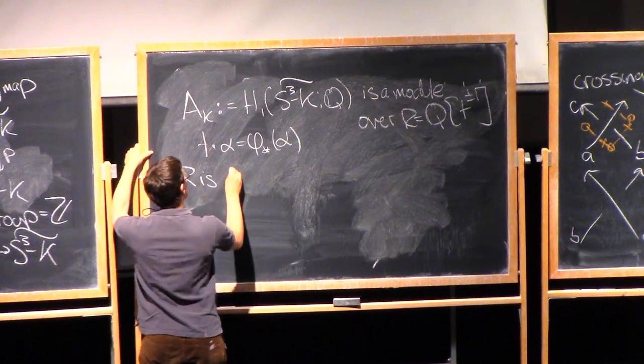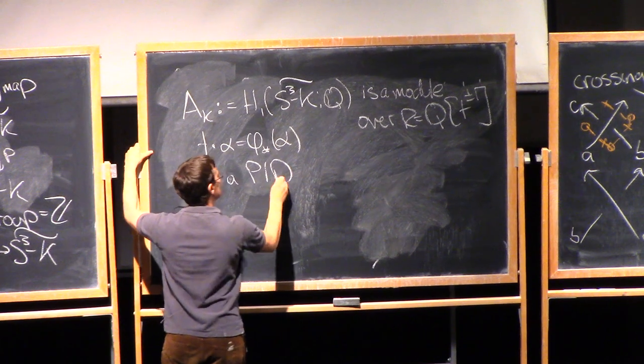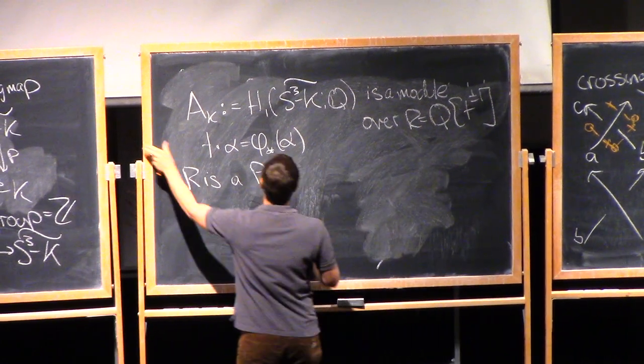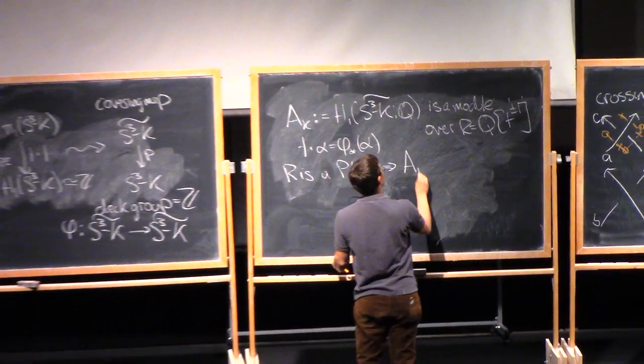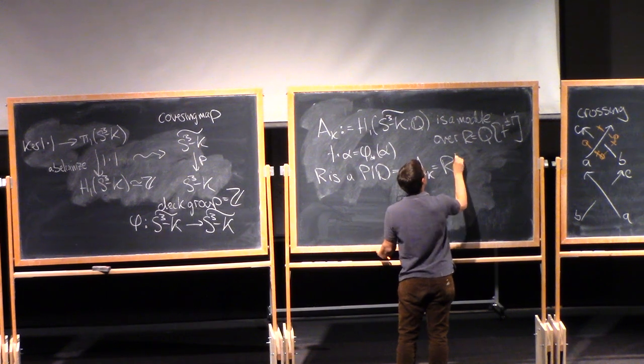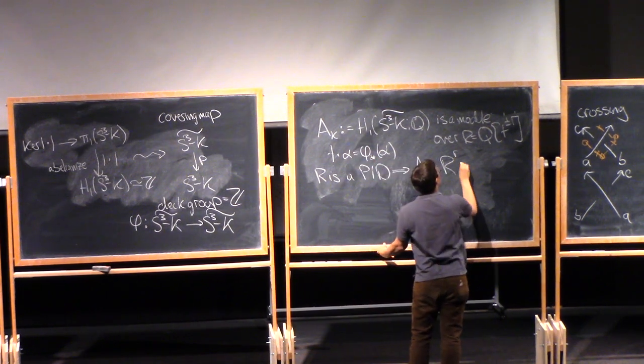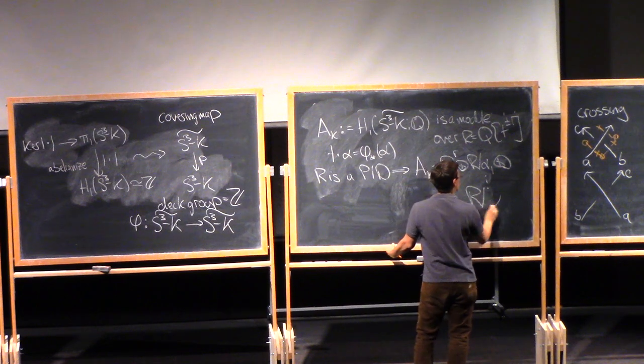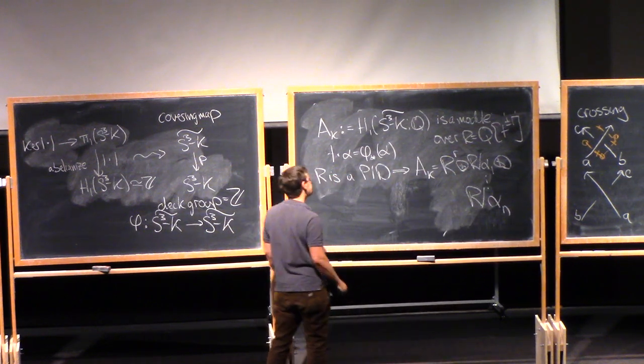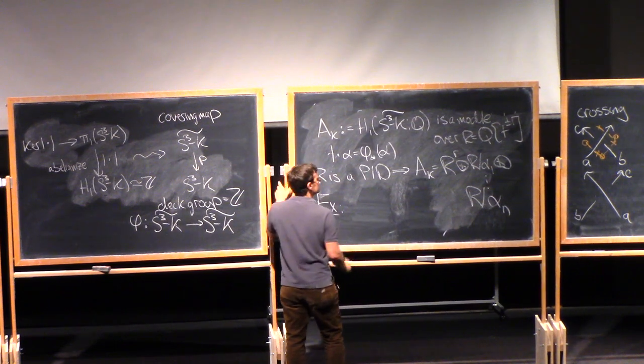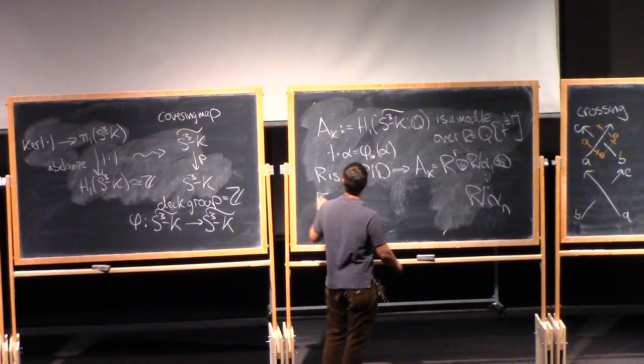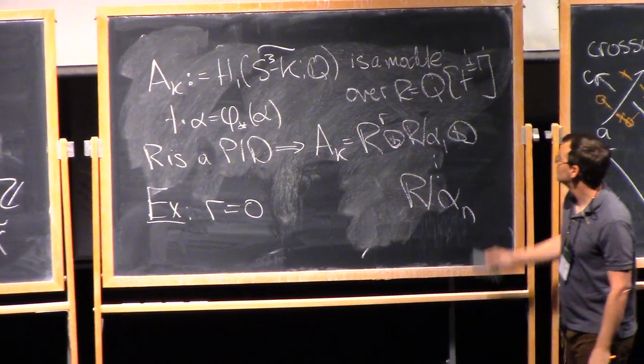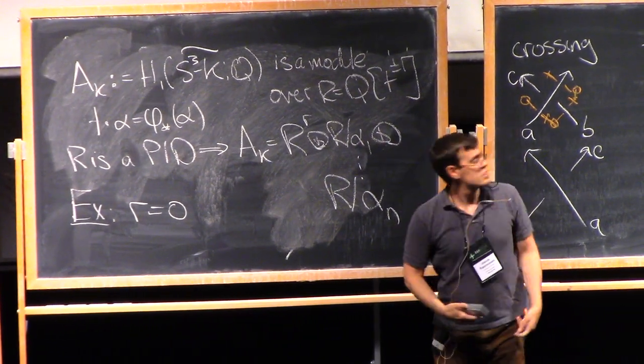So I could look, let's call it AK. This is what's called the Alexander module, is H1 of S3 minus K twiddle. And let's just use rational coefficients. So this is a module over the ring R, which is the ring of Laurent polynomials, Q adjoined T plus or minus 1. Well, it's obviously a module over Q. So I just need to tell you how multiplication by T acts. And that acts by the deck transformation. So T times an element alpha is phi lower star of alpha. And phi was a homeomorphism, so I can also act by T inverse. So R is a PID. So everybody knows that the polynomial ring, Q adjoined T, is a PID, but it's also true for the Laurent polynomials. So that means we have a structure theorem for what this module looks like.